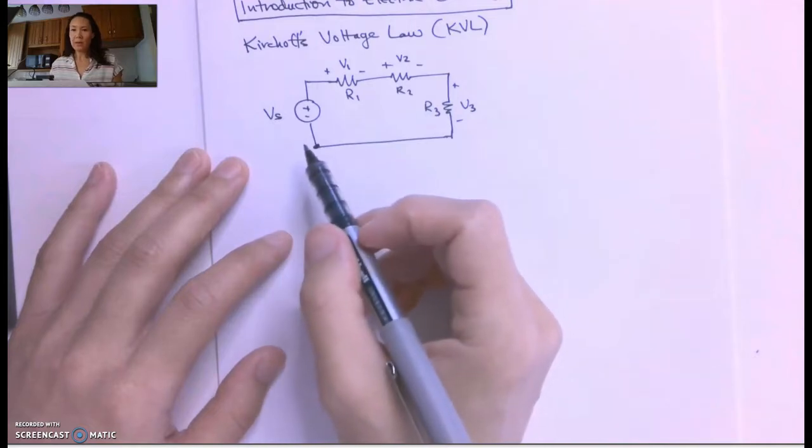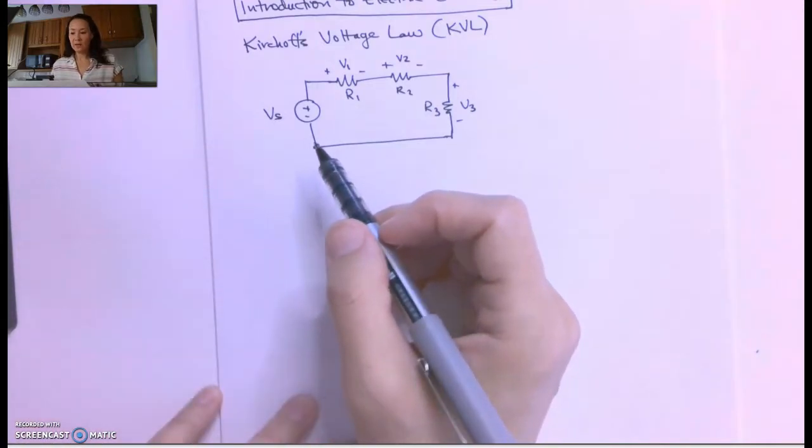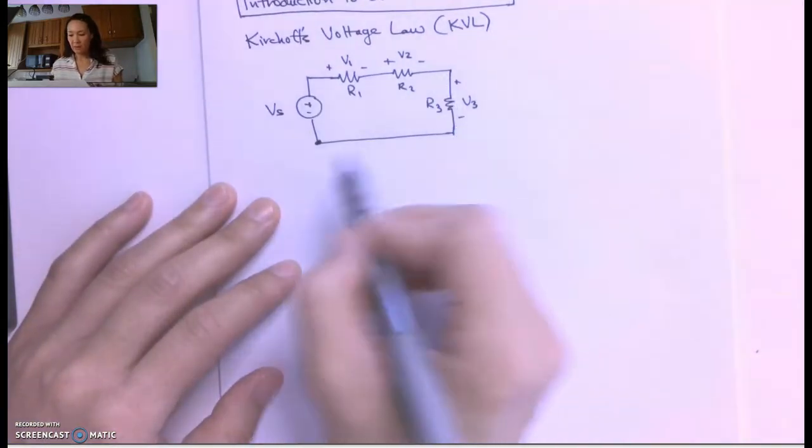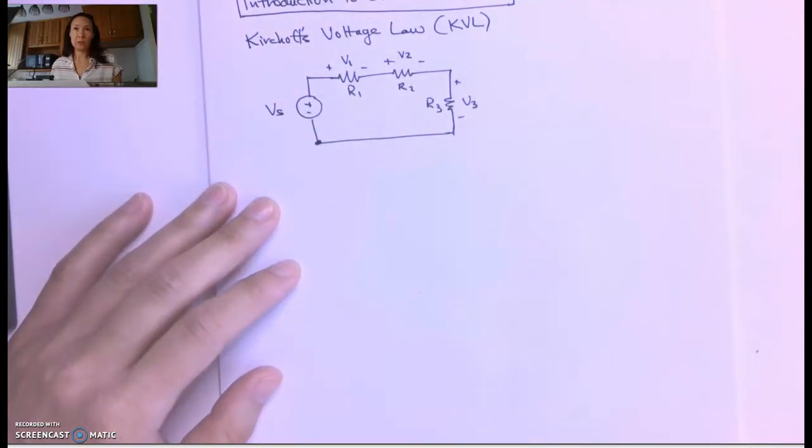As long as we follow the passive sign convention and we start any place here, if we add up all the voltages, we should get zero.